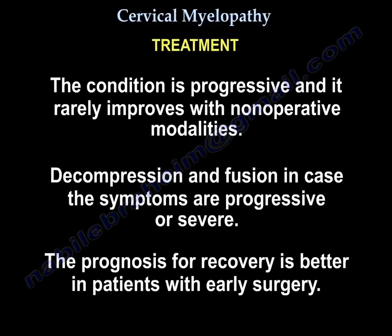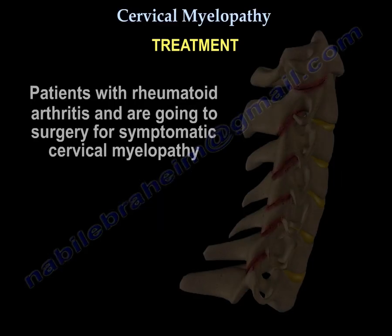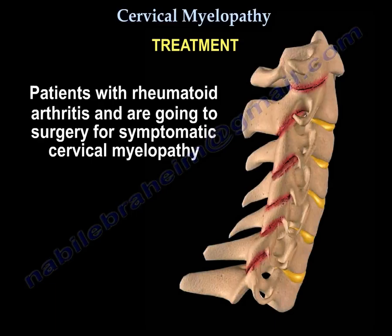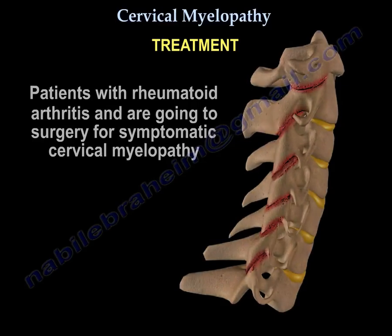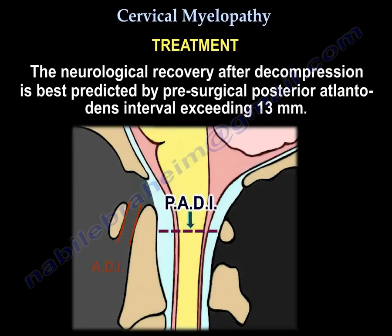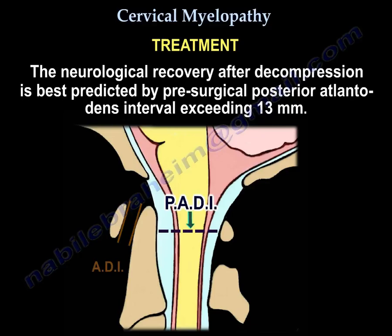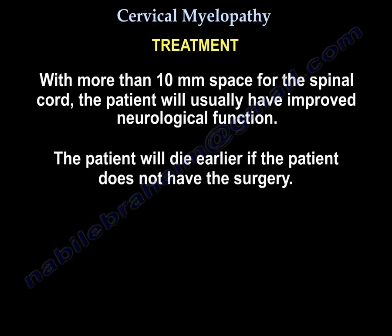Treatment: the condition is progressive and barely improves with non-operative modalities. Decompression and fusion are indicated when symptoms are progressive or severe. Prognosis for recovery is better with early surgery. In patients with rheumatoid arthritis undergoing surgery for cervical myelopathy, neurological recovery after decompression is best predicted by pre-surgical post-trail atlanto-dens interval exceeding 13 mm and more than 10 mm space available for the cord. Patients usually have improved neurological function, and will die earlier without surgery.